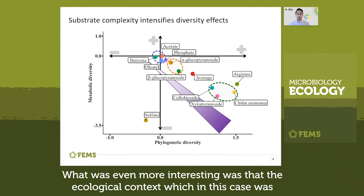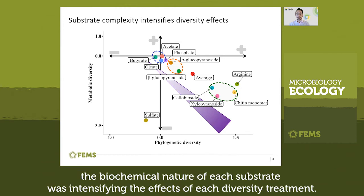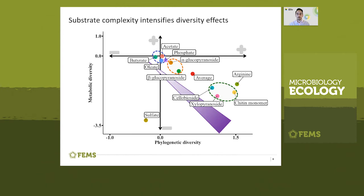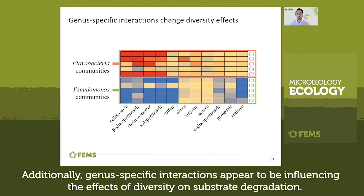What was even more interesting was that the ecological context — in this case, the biochemical nature of each substrate — was intensifying the effects of each diversity treatment. Additionally, gene-specific interactions appear to be influencing the effects of diversity on substrate degradation.